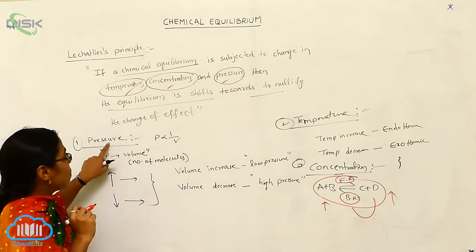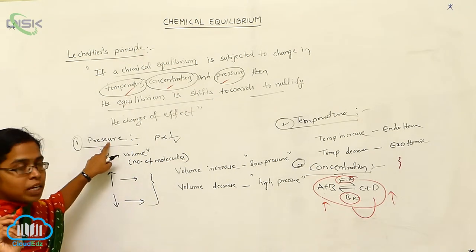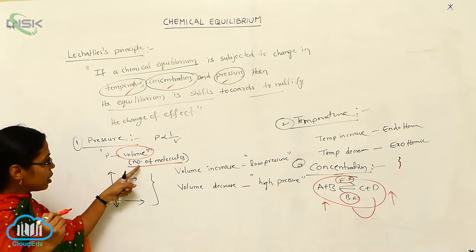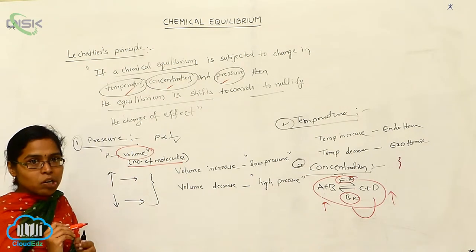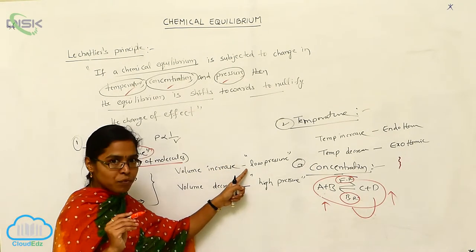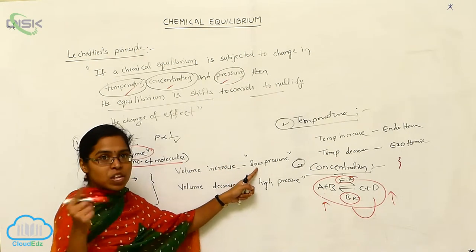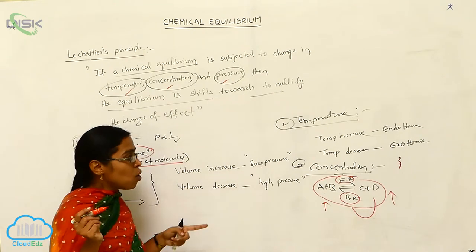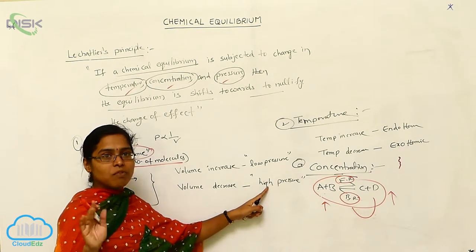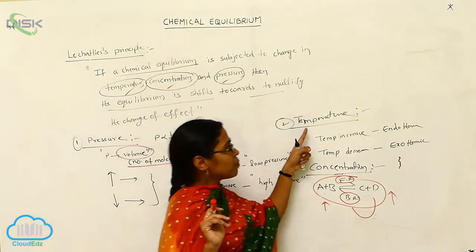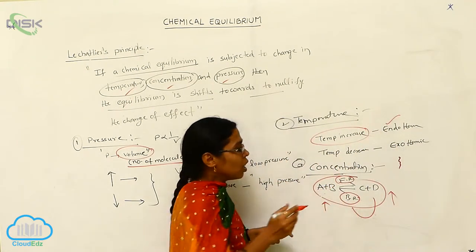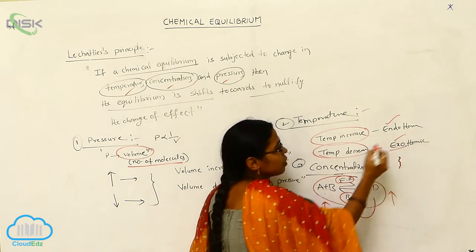The first effect is pressure. Pressure effect always depends upon volume, which means the number of molecules. Whenever the number of molecules increases, the chemical equilibrium shifts towards low pressure. Whenever volume decreases, high pressure is the favorable condition. For temperature: whenever temperature increases, endothermic reaction is favorable; whenever temperature decreases, exothermic reaction is favorable.